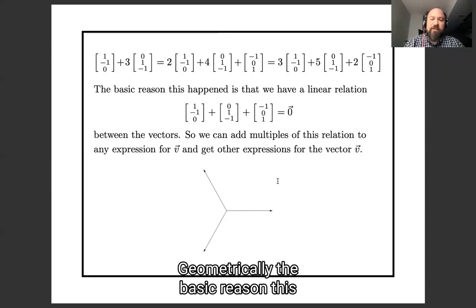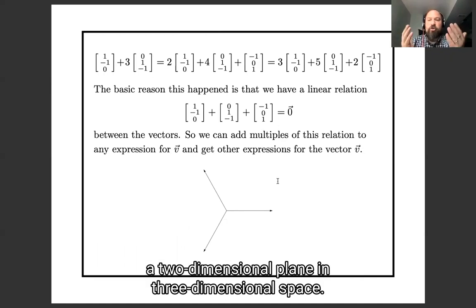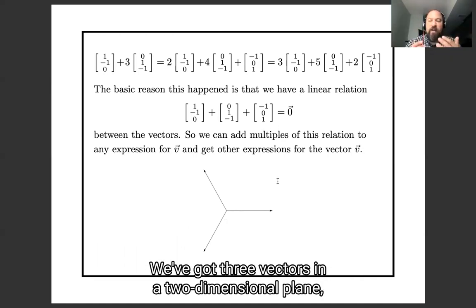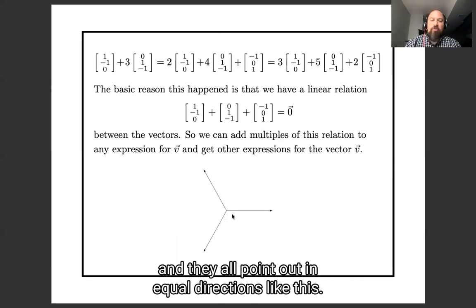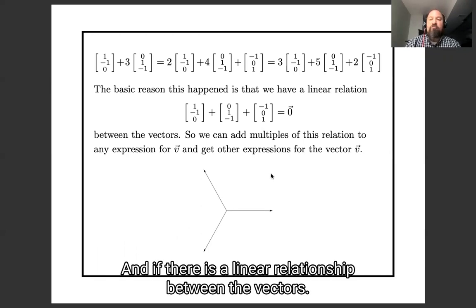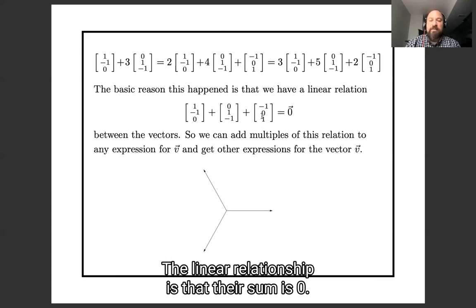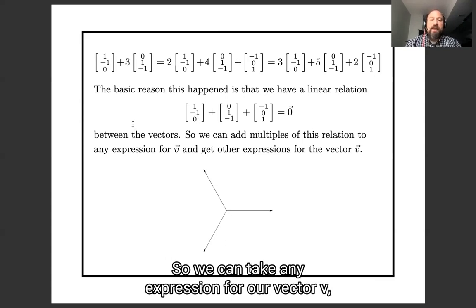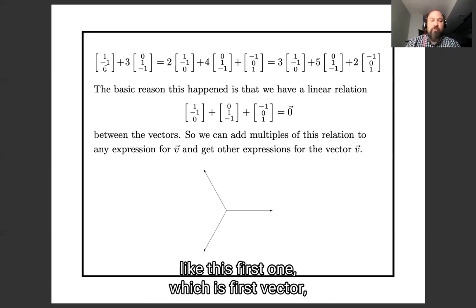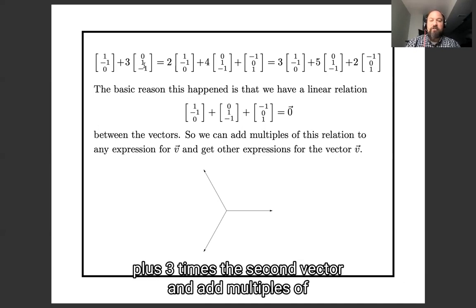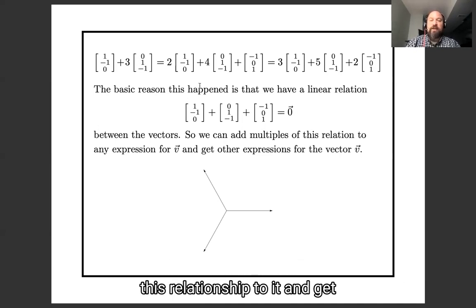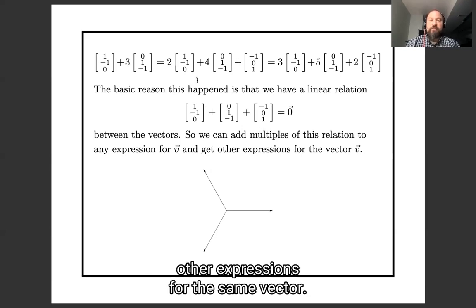And geometrically, the basic reason this happened is we've got a two-dimensional plane in three-dimensional space, we've got three vectors in that two-dimensional plane, and they all point out in different directions, and there's a linear relationship between the vectors. The linear relationship is that their sum is zero. So we can take any expression for our vector v, like this first one, which is first vector plus 3 times second vector, and add multiples of this relationship to it, and get other expressions for the same vector.